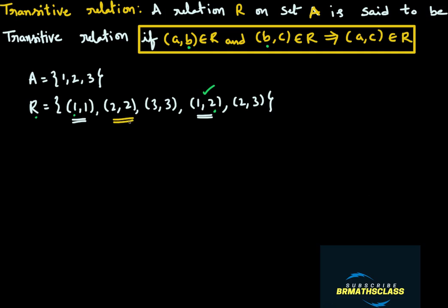Now take ordered pair (2,2). This ordered pair ends with 2. Is there any other ordered pair that starts with 2? Yes — here is the ordered pair (2,3) which starts with 2. That means we have found ordered pair (A,B) = (2,2) and (B,C) = (2,3). What is ordered pair (A,C)? (A,C) is ordered pair (2,3). Is ordered pair (2,3) there in this relation? Yes, it is there. Now take ordered pair (3,3). It ends with 3. Is there any other ordered pair that starts with 3? No. So just leave it and go to the next ordered pair.